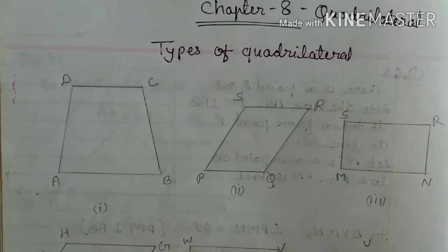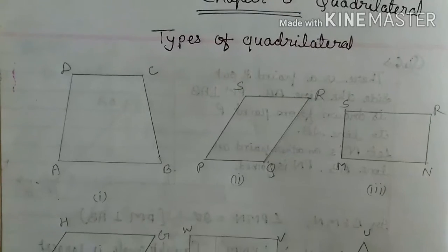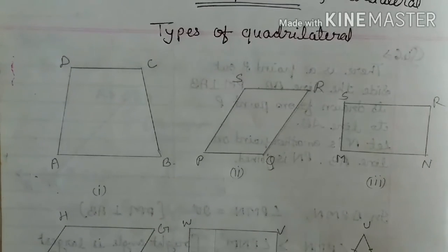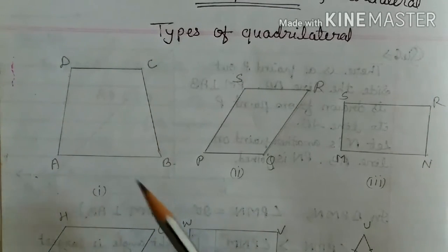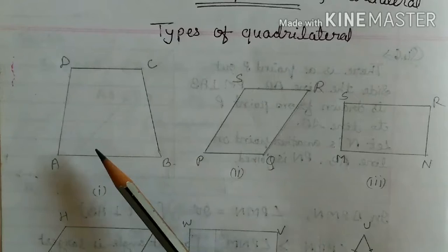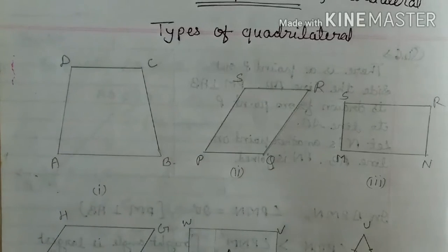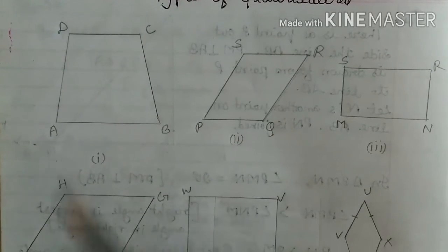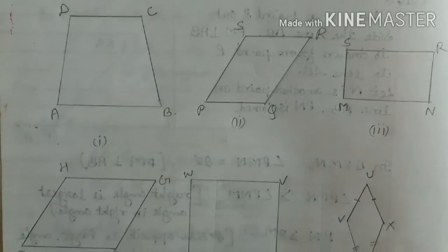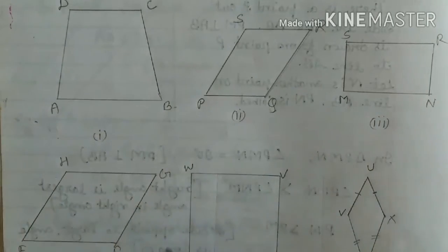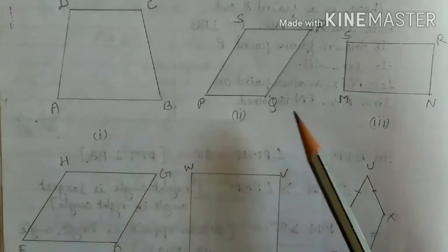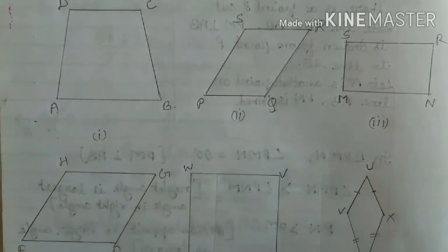Now here you see some figures are given. In figure 1, A, B, C, D — all these are quadrilaterals. All these figures have 4 sides, 4 vertices, and 4 angles.